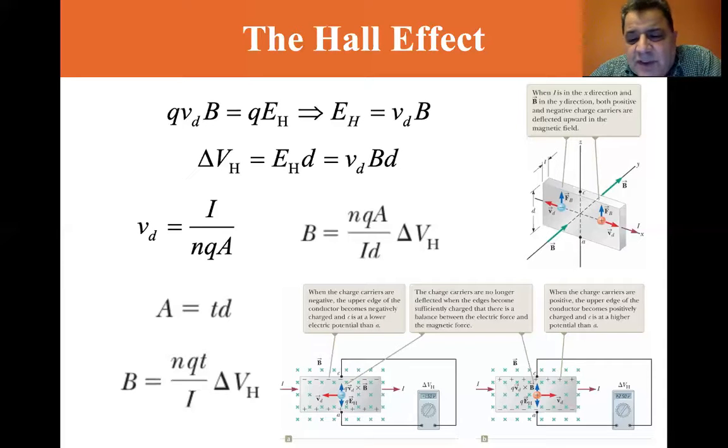If you have positive charge carriers, when the charge carriers are positive, the upper edge of the conductor becomes positively charged and C is at a higher potential than A.